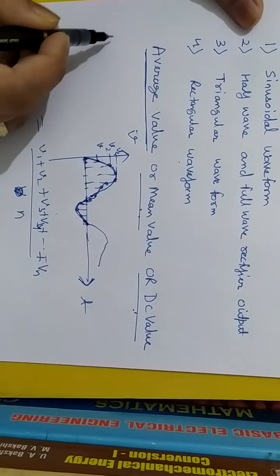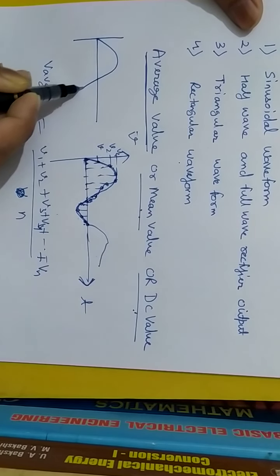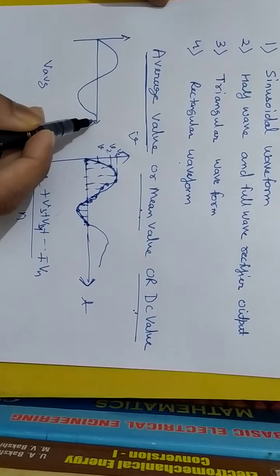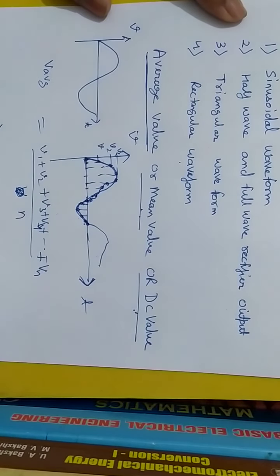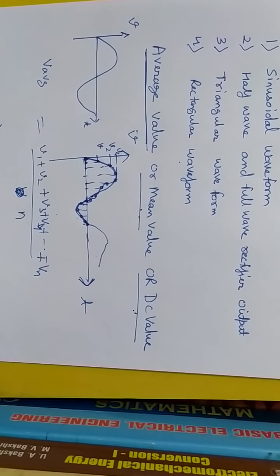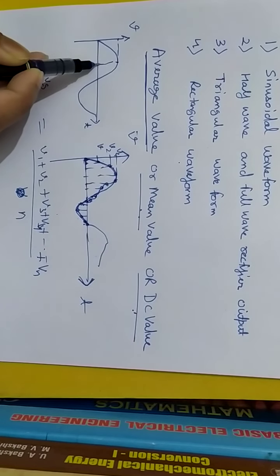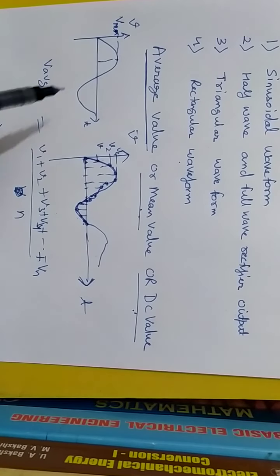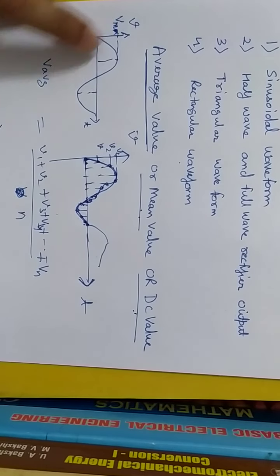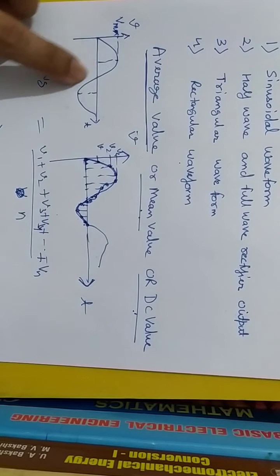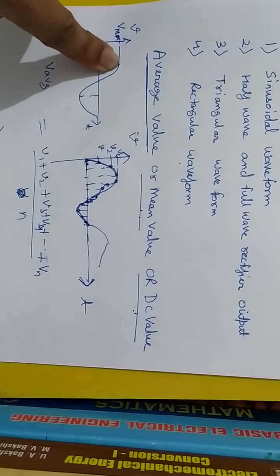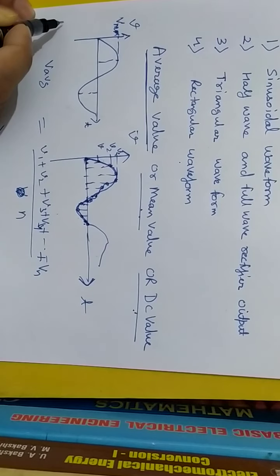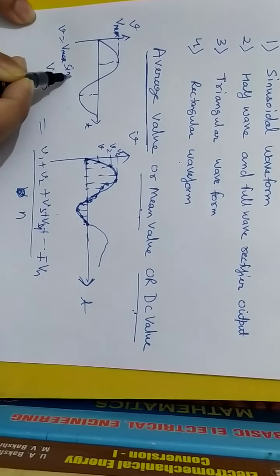Suppose I have a sinusoidal waveform. This is the maximum value Vmax, or Vm, or V0. In one cycle you see the sinusoidal quantity has a maximum value two times - one positive half and one negative half. For calculation purpose, the instantaneous value is V equals to Vmax sin omega t.